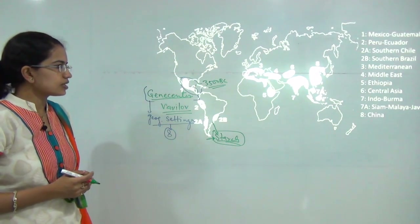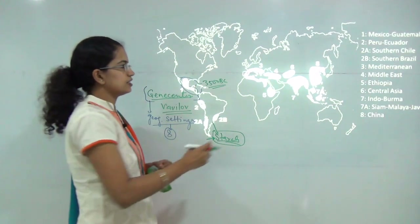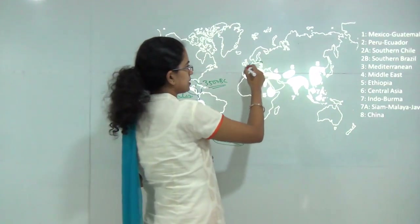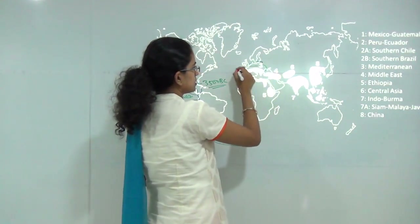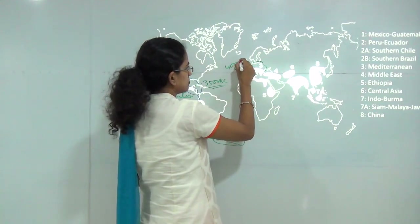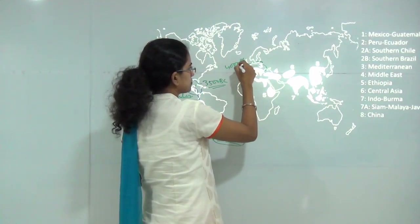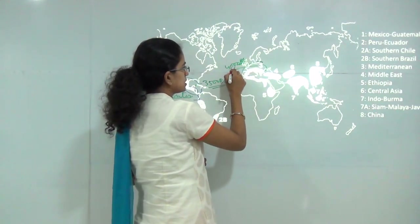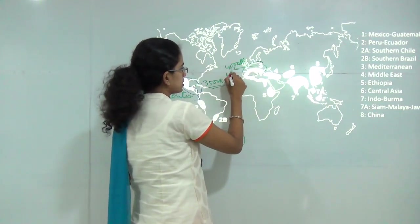The second gene center is the Peru-Ecuador region in South America. It is primarily known for starchy foods — notably the origin of sweet potato and potato — making starchy food crops the major output of this gene center.